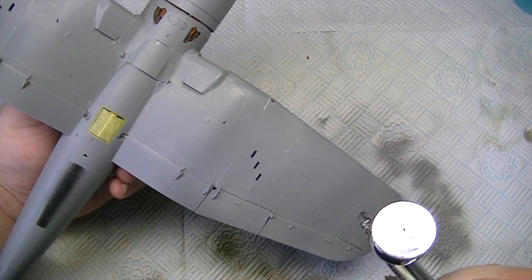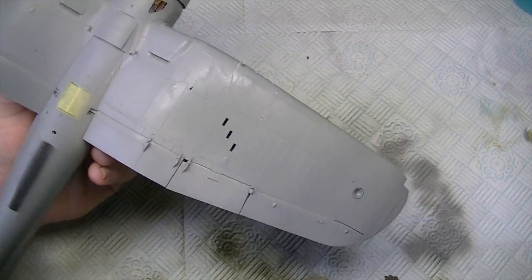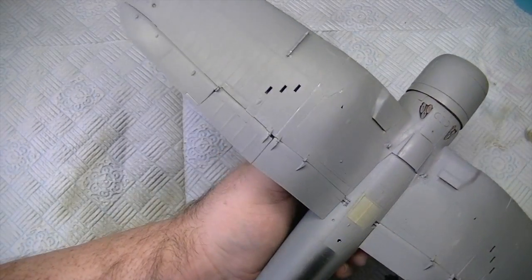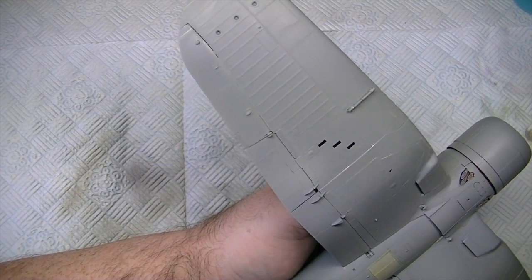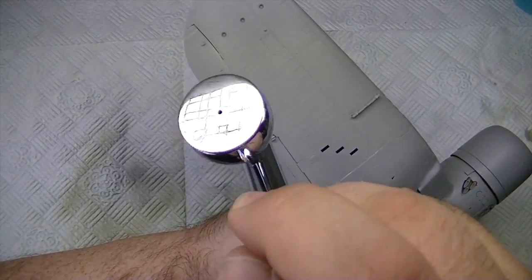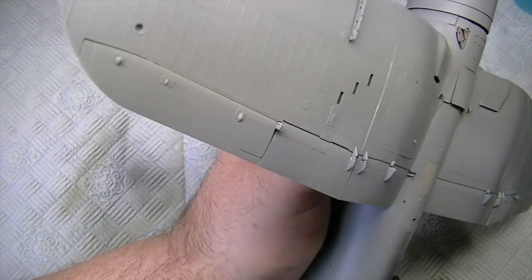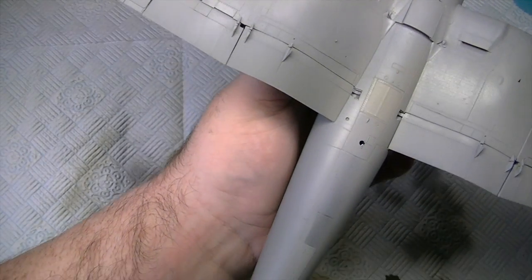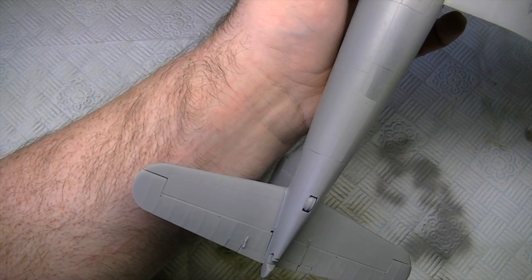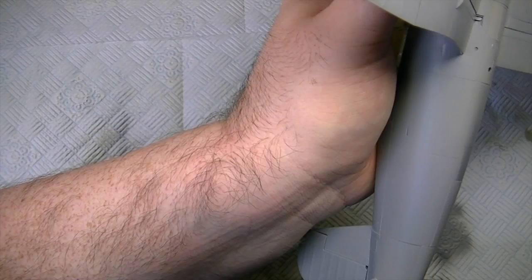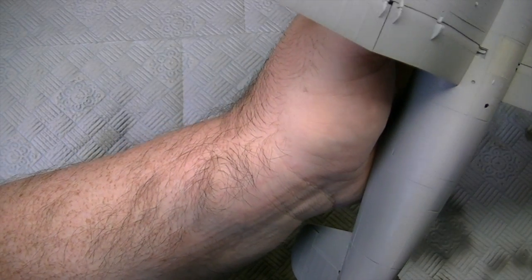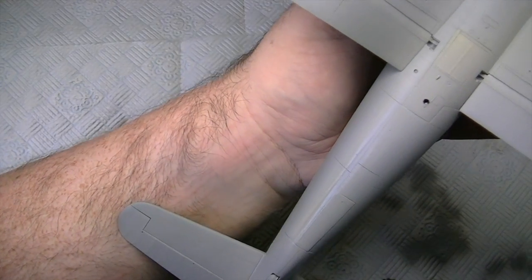The key with the primer is don't try and cover it in one go, you've just got to get a light dusting on everywhere you can. I'm trying to keep you guys in shot, quite hard to do with such a large aircraft. It's going to take a lot of primer to cover this, it's going to take quite a while. So I've just got a light dusting on, got the whole aircraft covered.